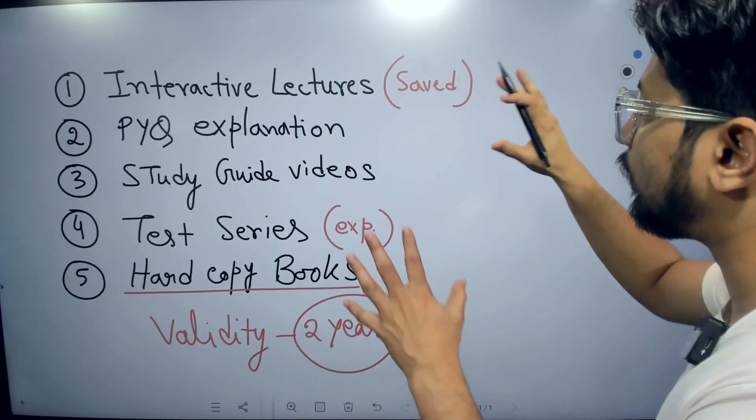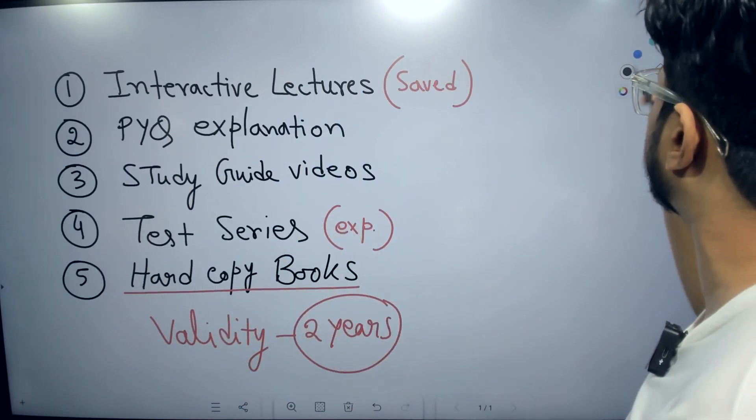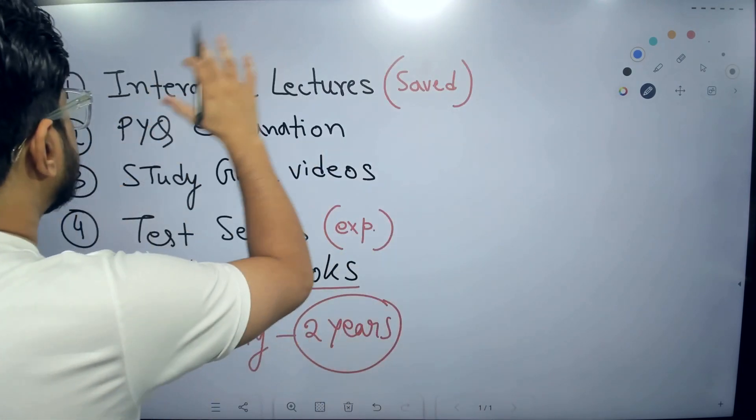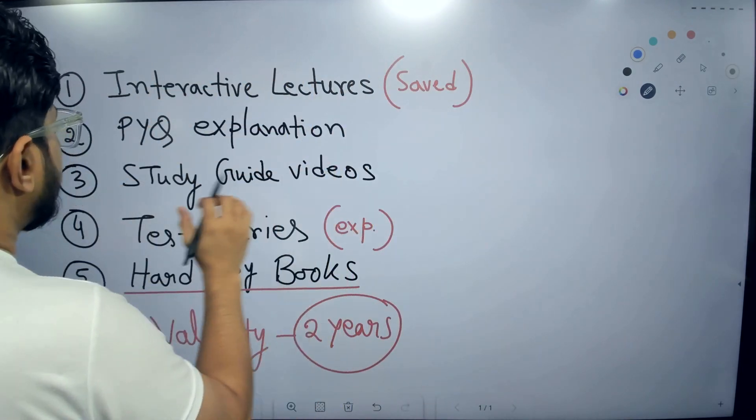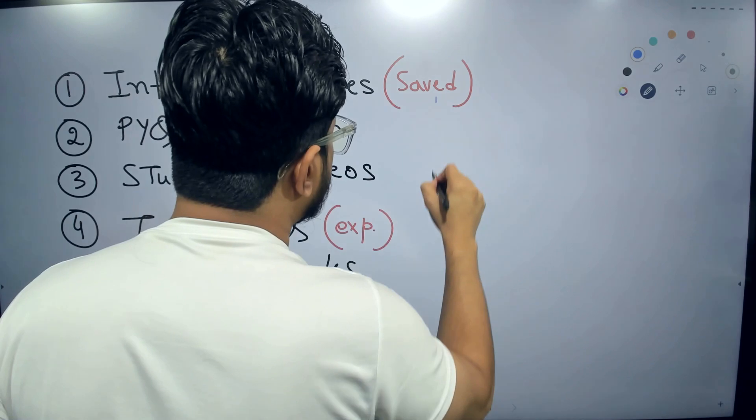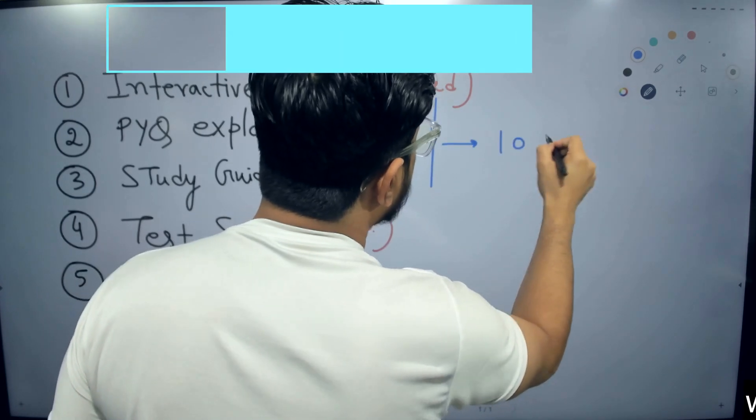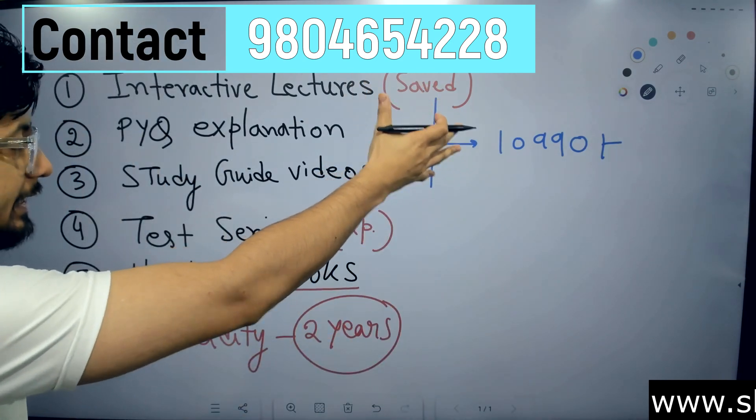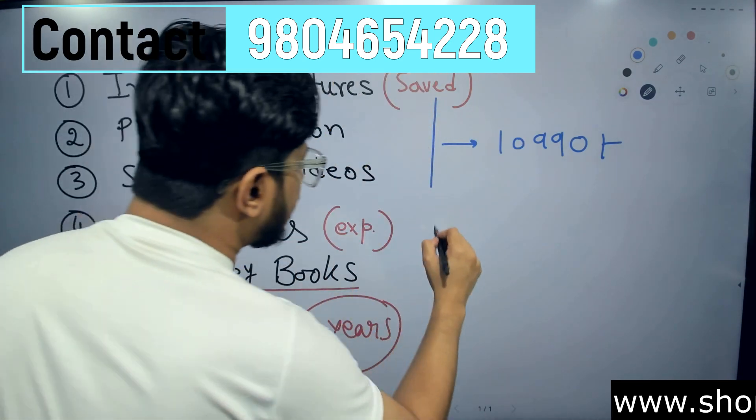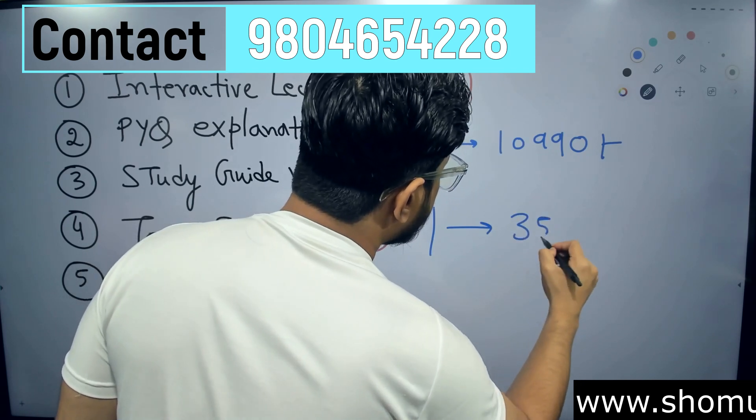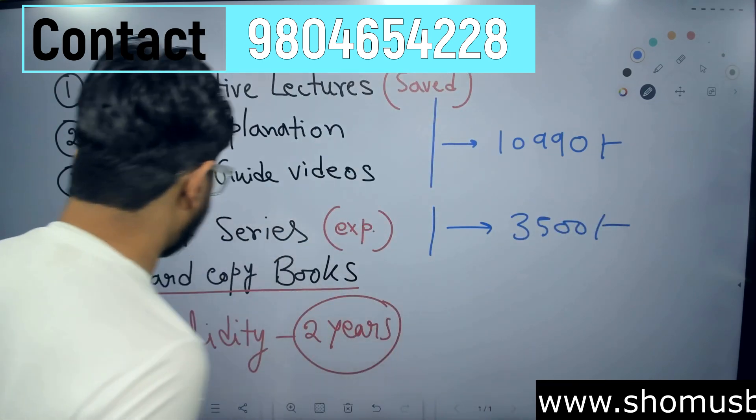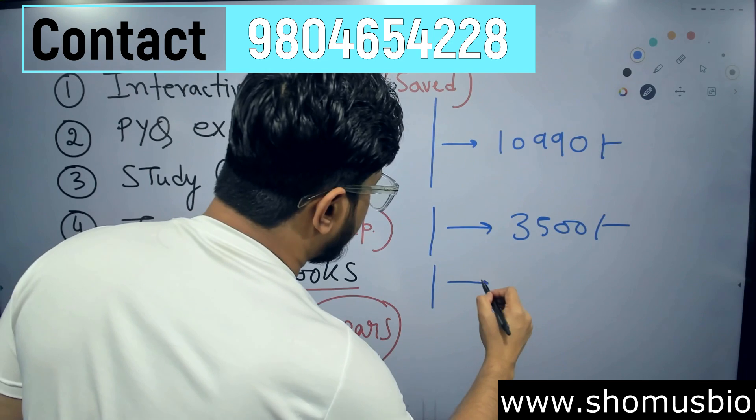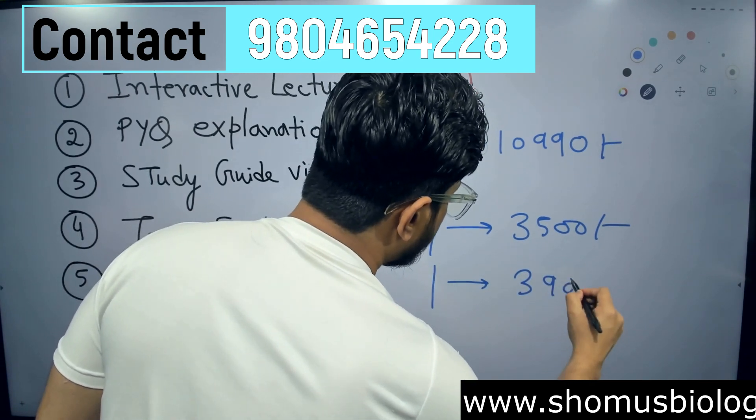Now we also provide this facility separately, so for the separate validity like lectures, PYQ explanations, study guide videos - for all this, this is a package worth 10,990 at our website. It is available to buy separately as a recorded version. Test series we conduct separately, the price is 3,500. Hard copy books we sell separately, the price is 3,900.